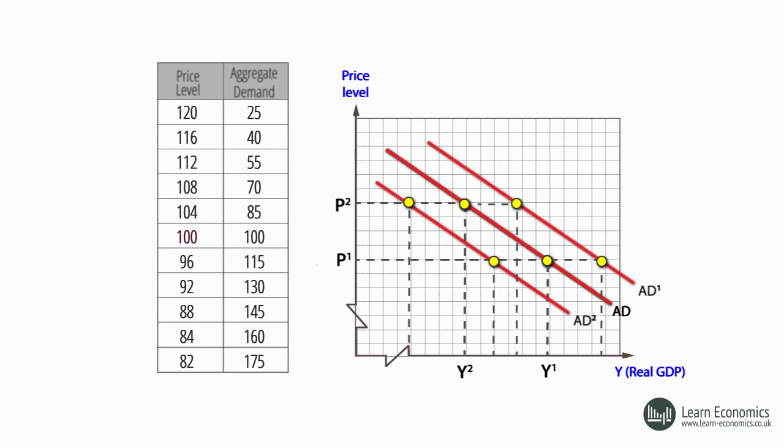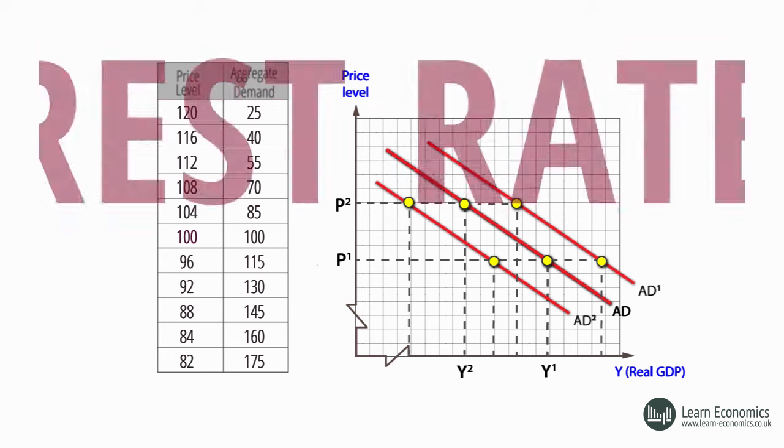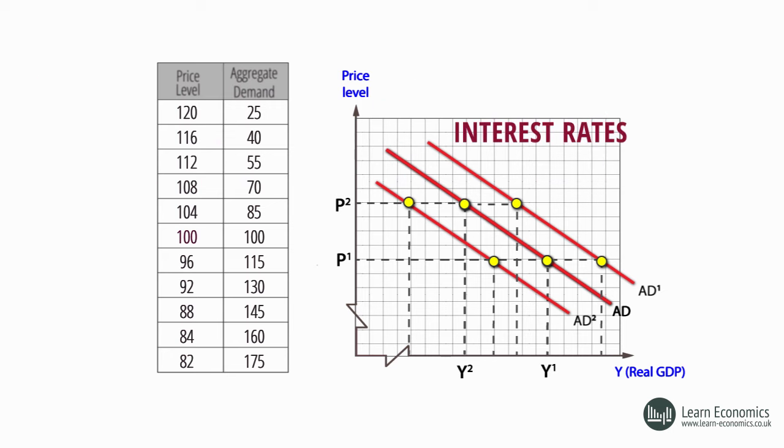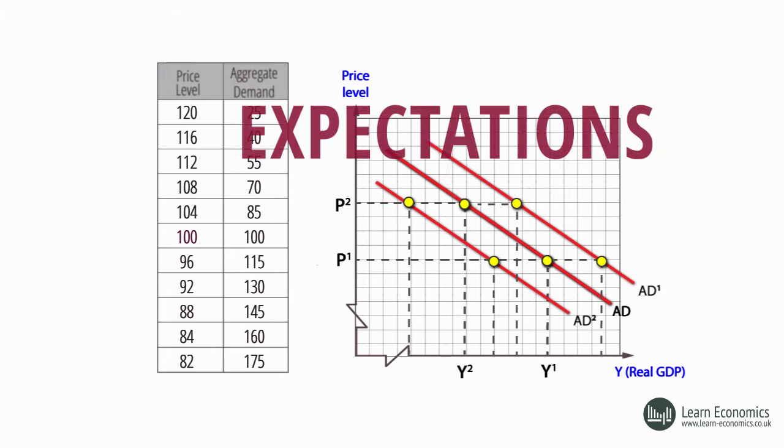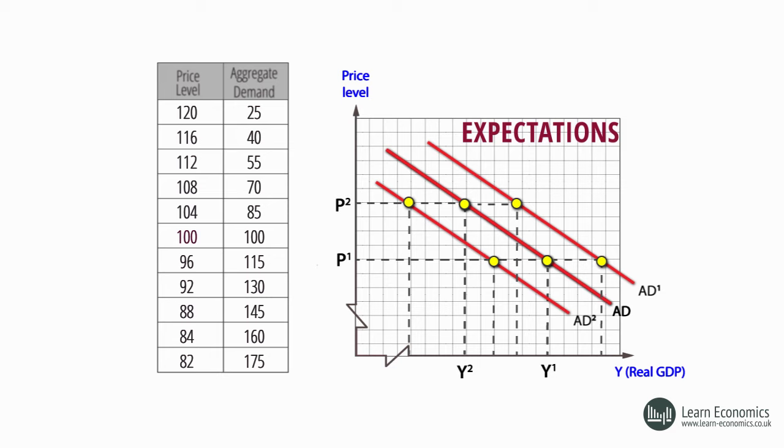Shifts from changes in investment can also arise from changes in the money supply, which affect interest rates and business decisions. Shifts also arise from changes in business confidence and expectations. A dip in business confidence will shift the AD curve to the left.